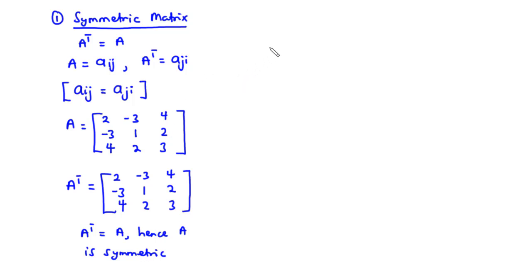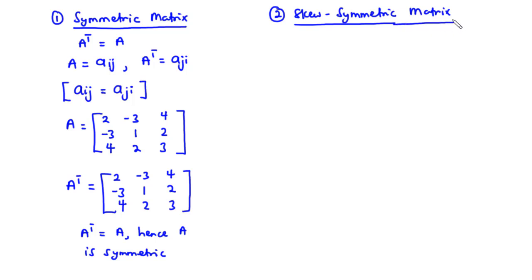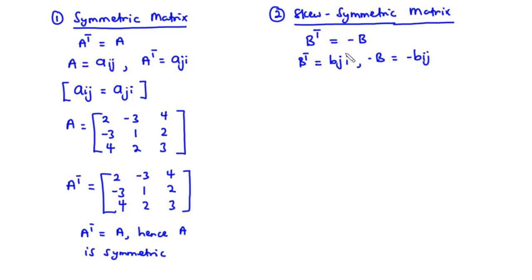Now let's move on to skew-symmetric matrices. A square matrix B is said to be skew-symmetric if the transpose of matrix B is equal to the negative of matrix B. Given that the transpose of B equals Bji and the negative of B equals negative Bij, if matrix B is skew-symmetric, then Bji equals negative Bij for all possible values of i and j.